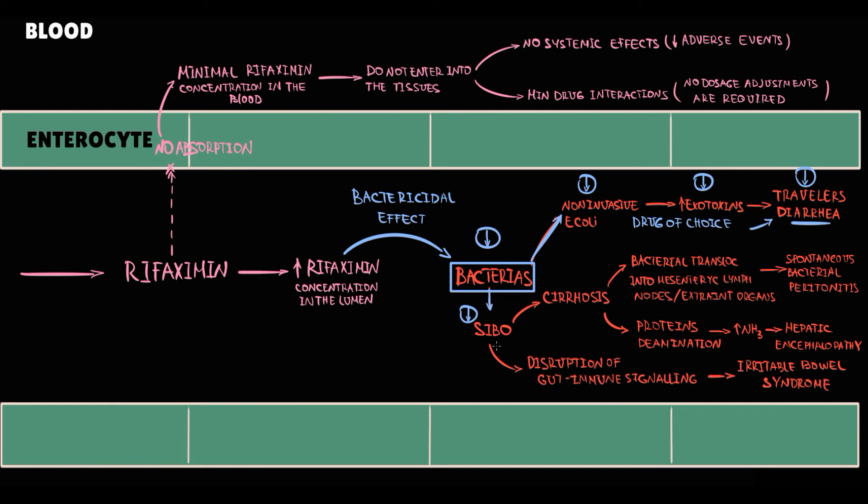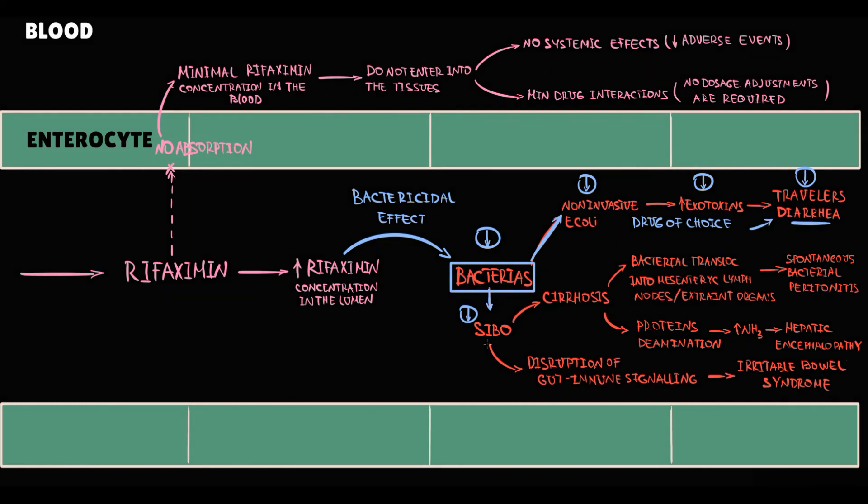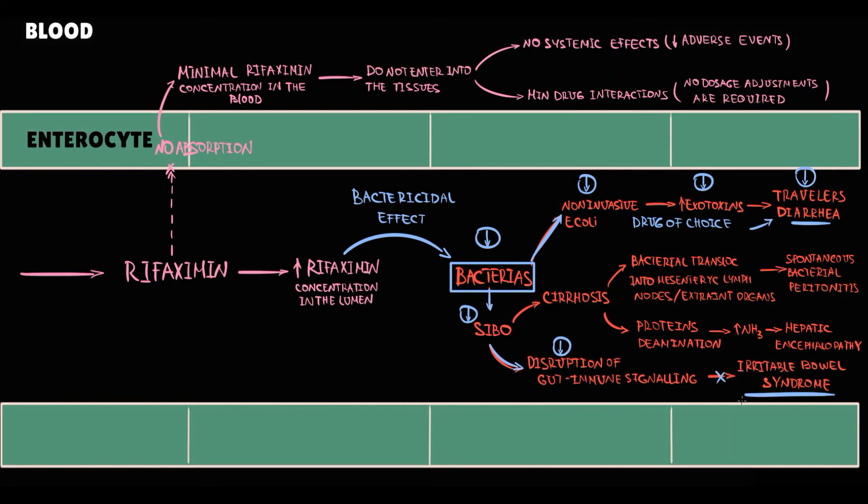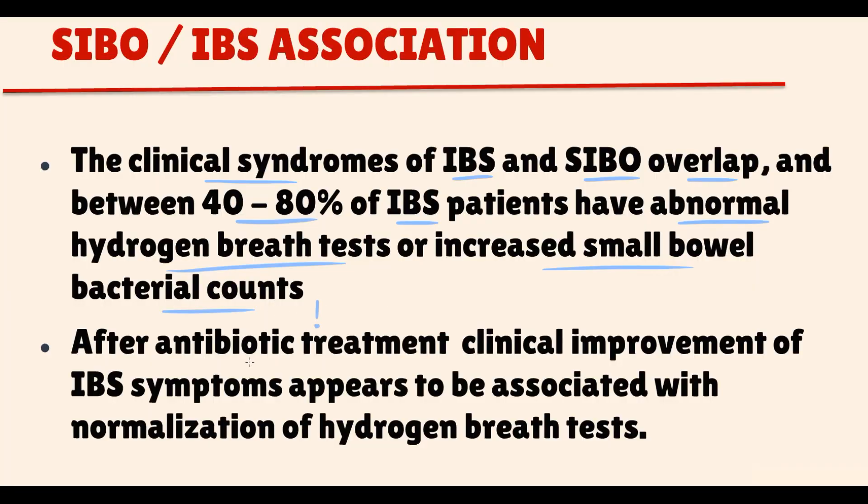Because irritable bowel syndrome can be caused by small intestinal bacterial overgrowth, in patients with irritable bowel syndrome, antibiotics such as rifaximin can be prescribed. And in fact, after antibiotic treatment, clinical improvements of irritable bowel syndrome symptoms appear to be associated with normalization of hydrogen breath tests.